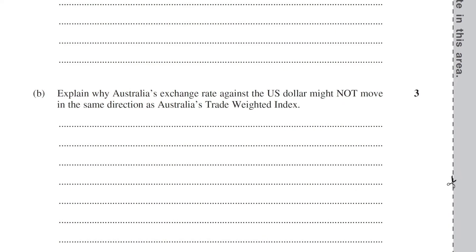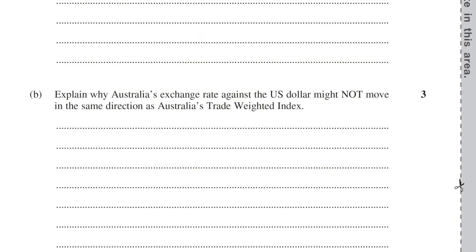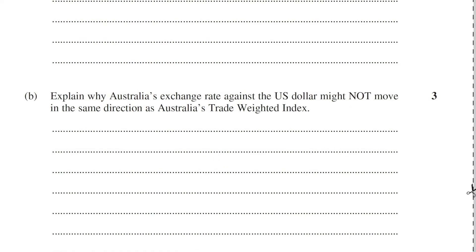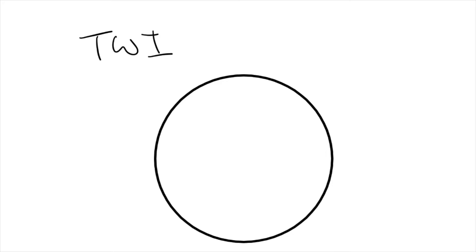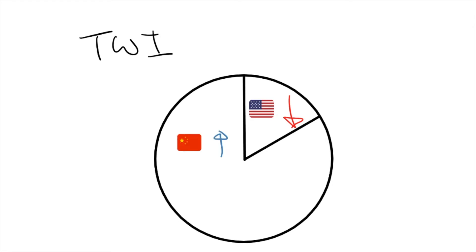Now we know how the TWI is calculated, we can test our understanding with an HSC question. 2019's Question 21B asks why Australia's exchange rate against the US dollar might move in the opposite direction to the TWI. It helps to visualize the answer first. The TWI is made up of a basket of currencies, each possibly moving in different directions, weighted towards our major trading partners' currencies. The Aussie dollar could be depreciating against the US, but if it's appreciating against larger trading partners such as China and Japan, the TWI will continue to increase as the US depreciation has a lesser effect.